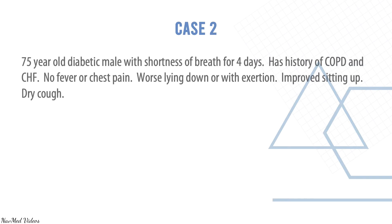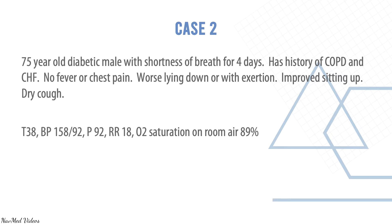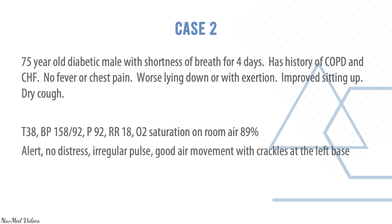Case two: a 75-year-old diabetic male with shortness of breath for four days. History of COPD and congestive heart failure. No fever or chest pain, worse lying down or with exertion, improved sitting up, dry cough. Temperature 38, blood pressure 158/92, pulse 92, respiratory rate 18, oxygen saturation 89% on room air. Alert, no distress, irregular pulse, good air movement with crackles at the left base.